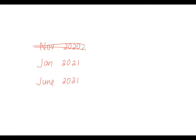أنا شخصياً مش بحب أدرس November. لكن بدرس في January. لو احنا بنتكلم على الـ AS، ممكن تاخد هنا P1 و P2 وكمان M1 وتخلص الـ AS بتاعتك، أو تاخد P1 و P2 وتأجل M1 وتاخدها في June. It depends على كل واحد فيكم.